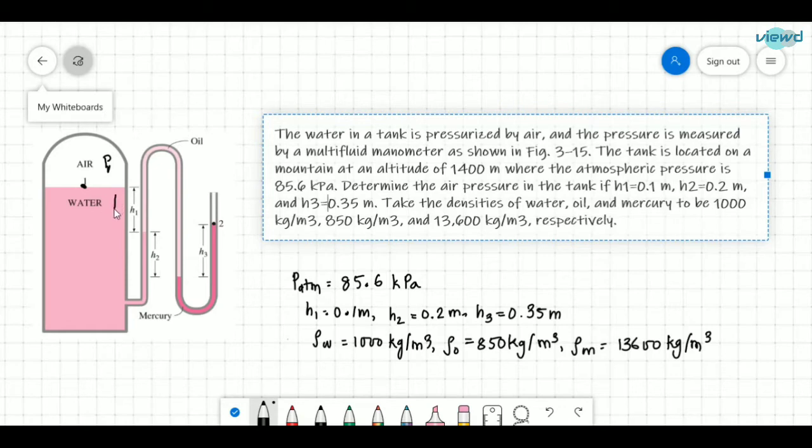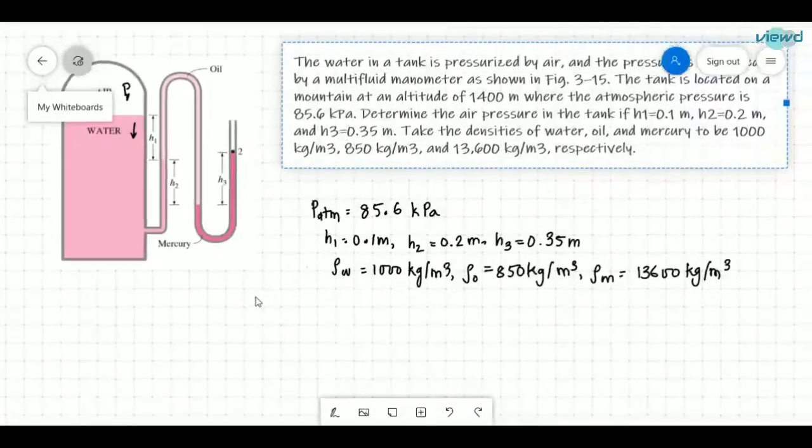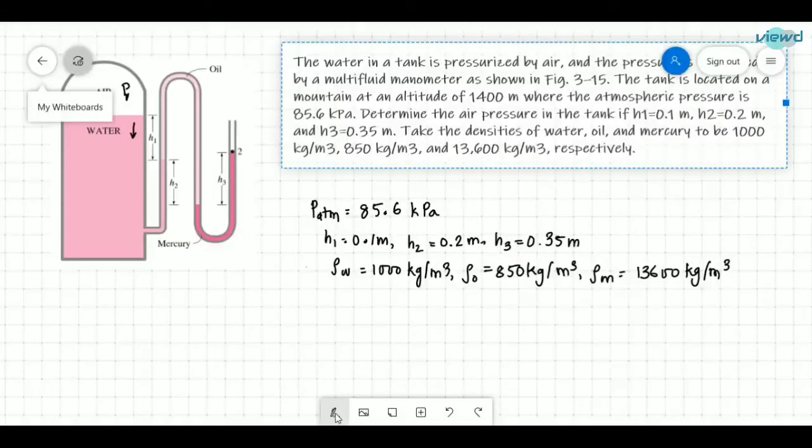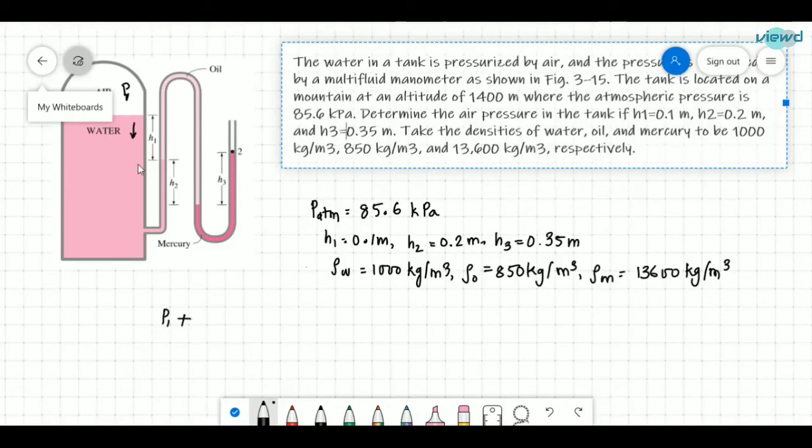I am going deep into this. As I go deep into this, we need to add rho GH. Now P1 is the pressure of air plus I go until here so I can jump to the surface. So this is also water. So P1 plus rho water G. How much depth did I go? It is H1.